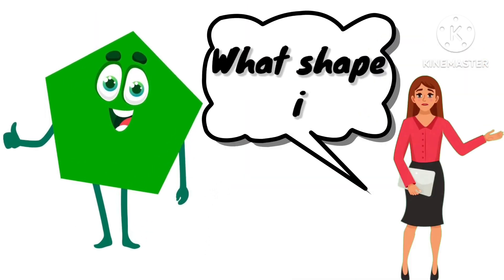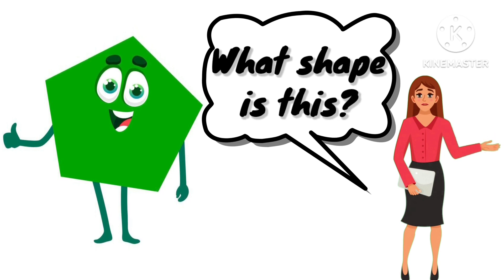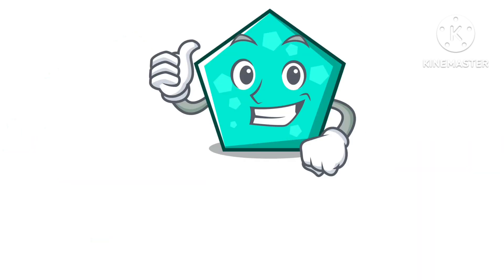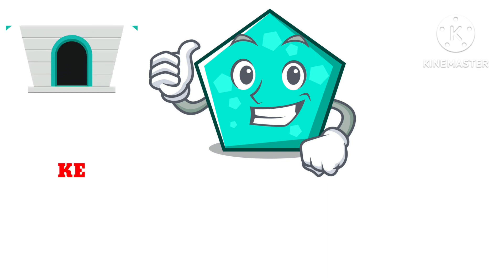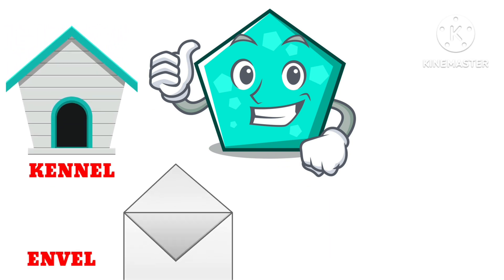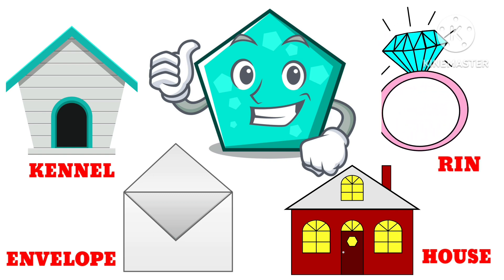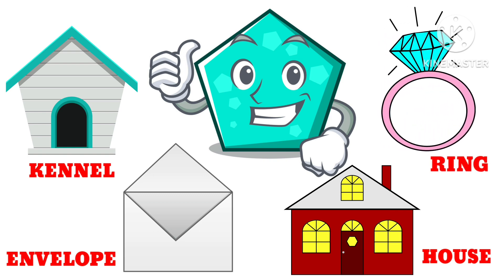What shape is this? This is a pentagon. So kids, let's learn about the objects that are pentagon in shape. Examples: kennel, envelope, house, and drink are all pentagon in shape.